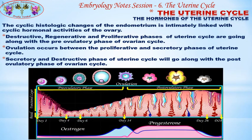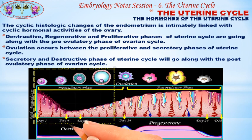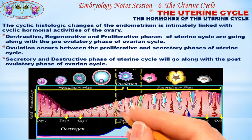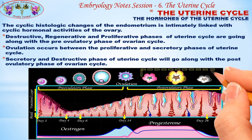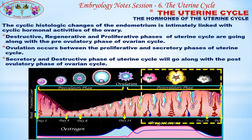The cyclic histological changes of the endometrium are intimately linked with the cyclic hormonal activities of the ovary. The destructive, regenerative, and proliferative phases of the uterine cycle correspond with the pre-ovulatory phase of the ovarian cycle. Ovulation occurs between the proliferative and secretory phases of the uterine cycle. The secretory and destructive phases of the uterine cycle correspond with the post-ovulatory phase of the ovarian cycle.